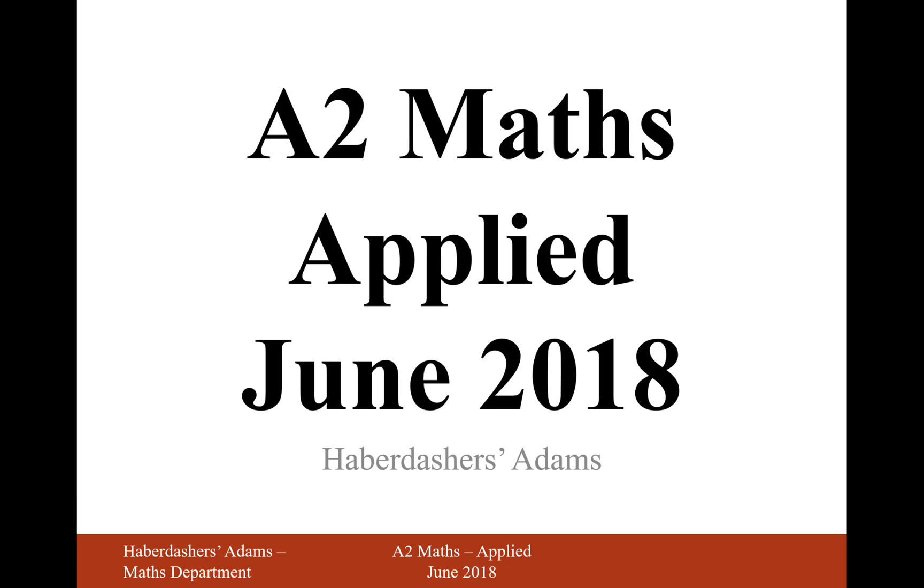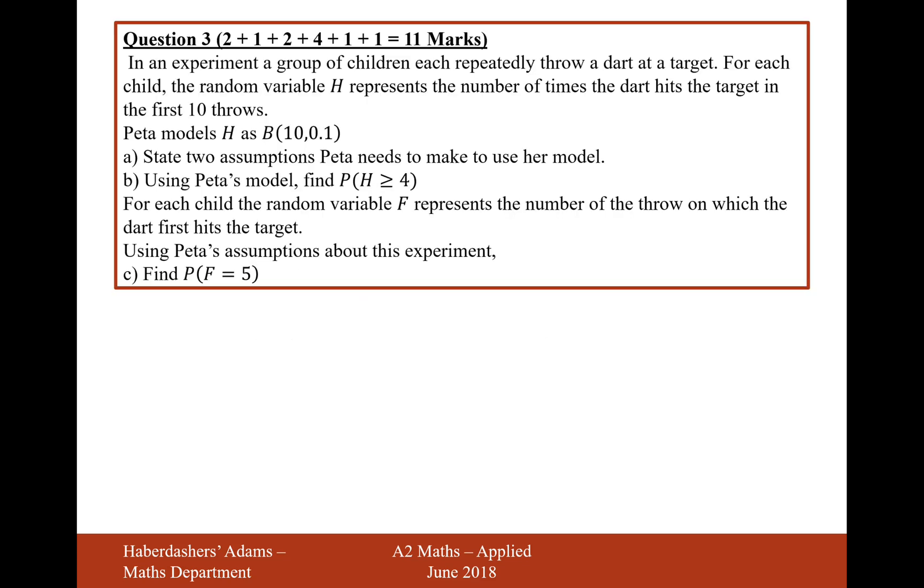Hello there, welcome to the June 2018 Applied Paper. Here we're looking at question 3. In an experiment, a group of children each repeatedly threw a dart at a target. For each child, the random variable H represents the number of times the dart hits the target in the first 10 throws.